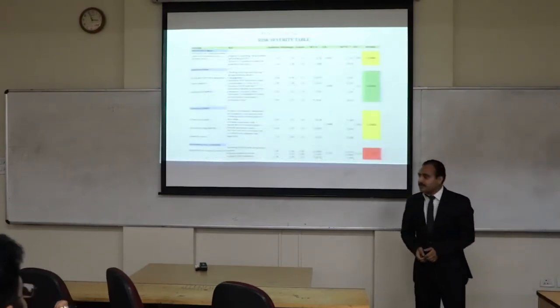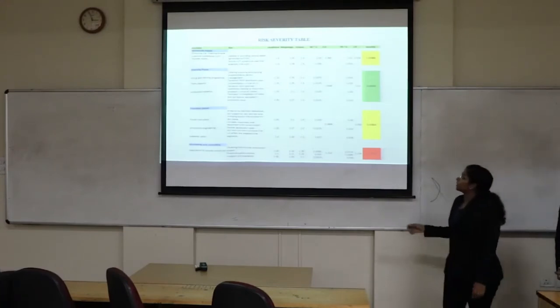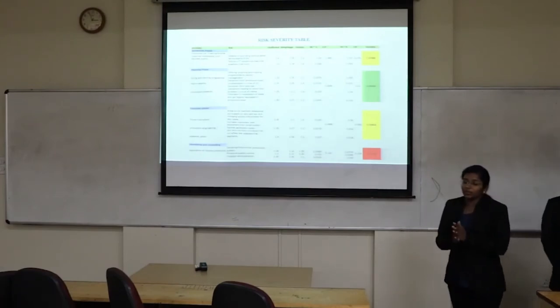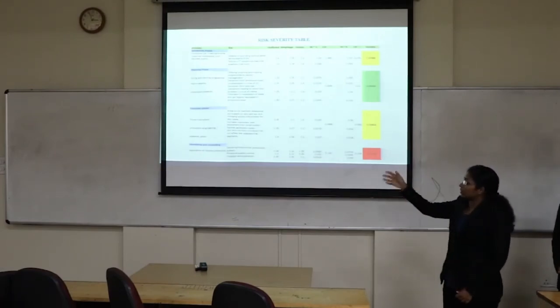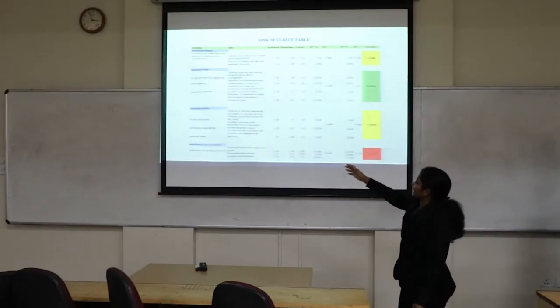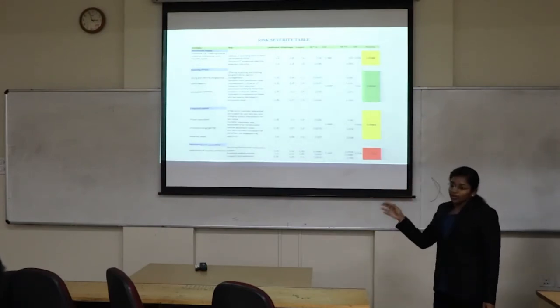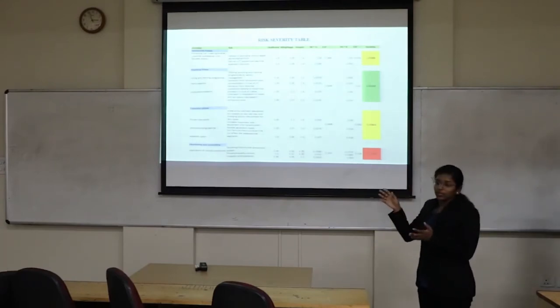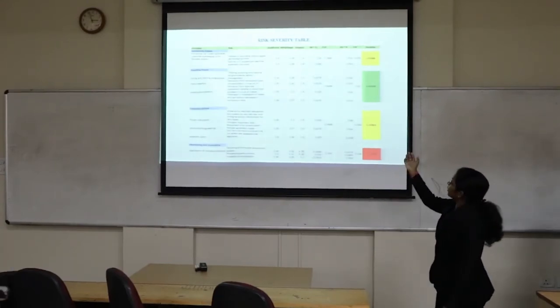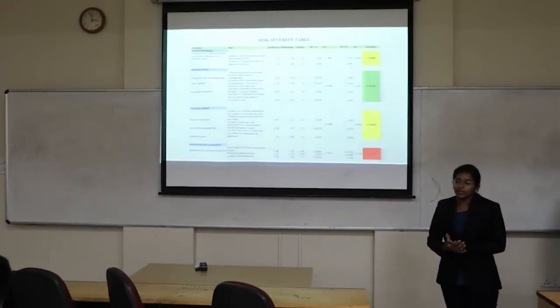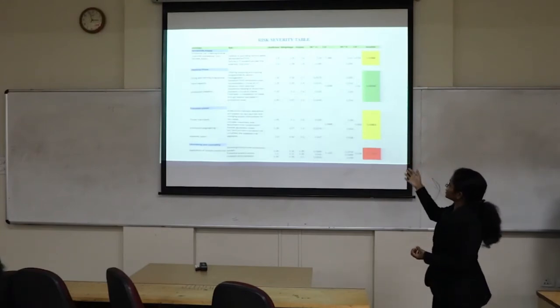This is risk severity table. I have took all the activities from the work breakdown structure. All these activities are divided into risk. We have four phases: planning, execution and monitoring and control. In all these phases what are the risks associated I have written. Likelihood is the chances of occurring the event, and next is weightage and impact.